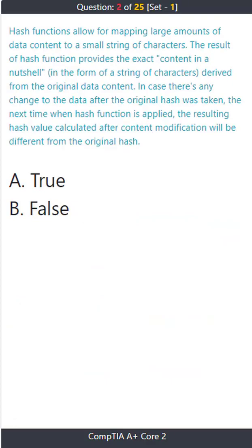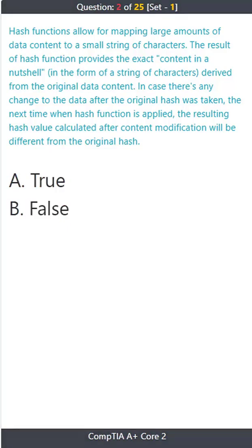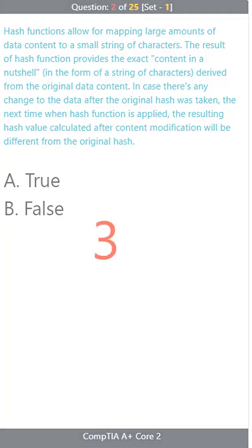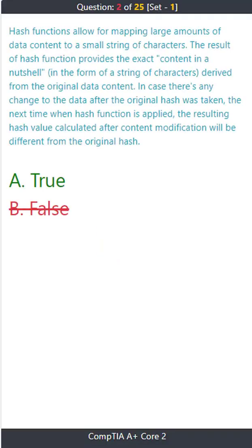Question 2: Hash functions allow for mapping large amounts of data content to a small string of characters. The result of a hash function provides the exact content in a nutshell. In case there's any change to the data after the original hash was taken, the resulting hash value calculated after content modification will be different from the original hash. A) True. B) False. The correct answer is A: True.